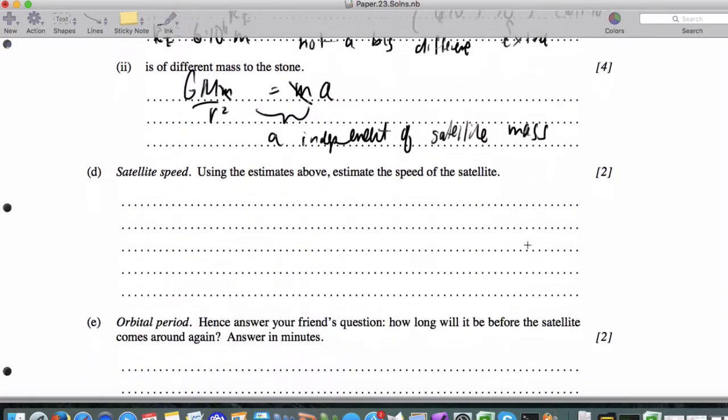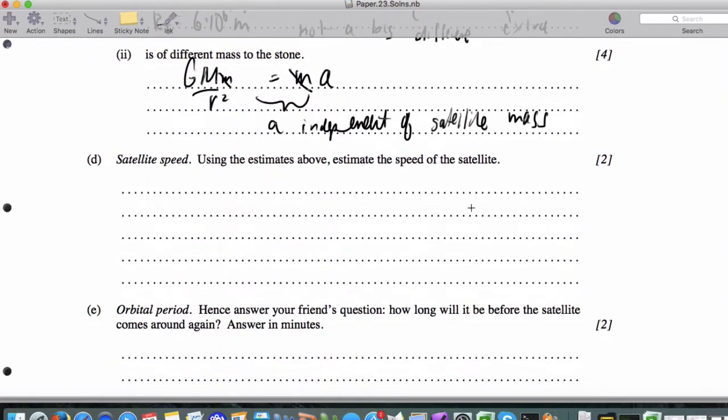Now, let's go ahead and actually estimate the speed of the satellite. What we can say is G equals V squared over R. And in this case, we can actually say 10, right, equals V squared over 6 times 10 to the 6th. Or, in other words, V squared is 6 times 10 to the 7th, and V ends up being about 8 times 10 to the 3rd meters per second.